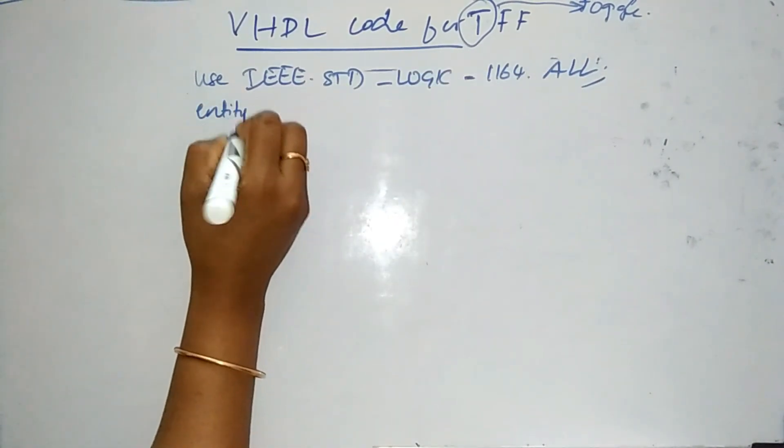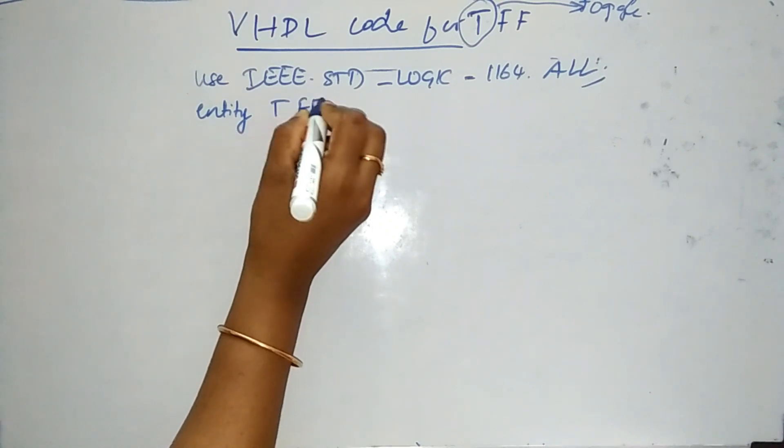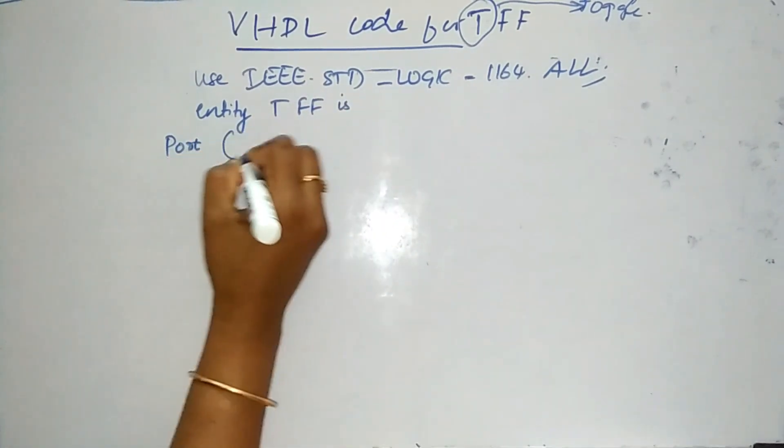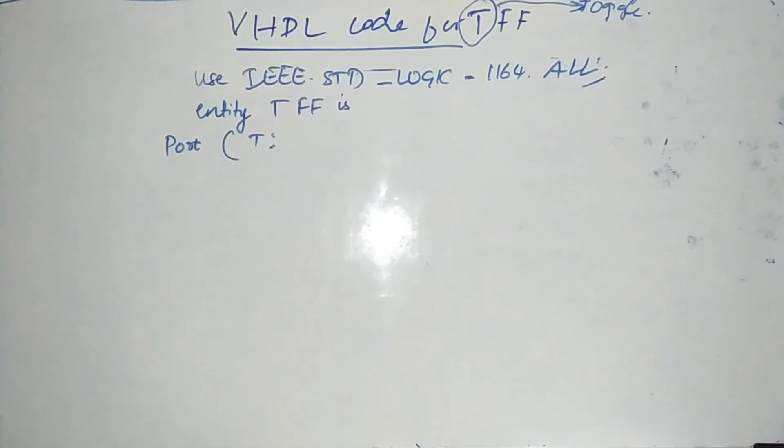So entity here will be our T-flip-flop. So let me declare the port. Inside the port, as we know that we will have to declare our inputs as well as the output.